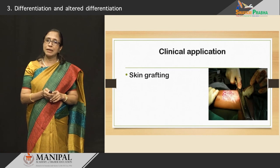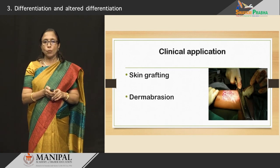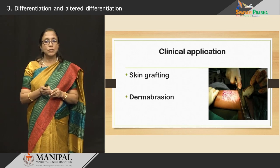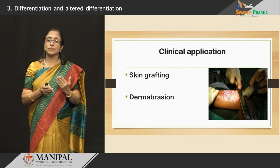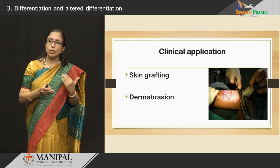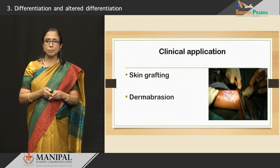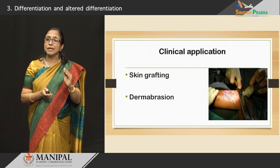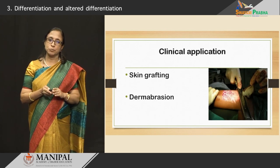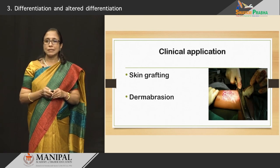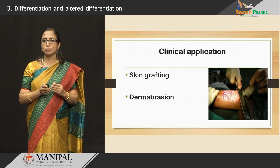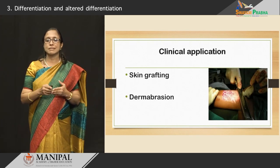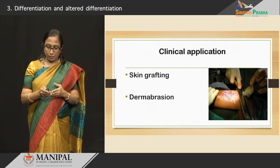Another example where skin as a labile cell is used is in dermabrasion. People go to the beauty parlor for cosmetic purposes; the surface cells of the skin are being removed and the cells below come up. In dermabrasion, when there are deep scars in the skin, by specific techniques the surface skin is removed and the scars are hidden, making the skin beautiful. The gastrointestinal cells and skin cells are being replaced on a daily basis because they are labile cells.